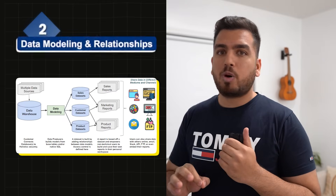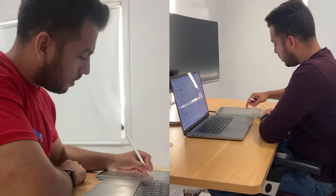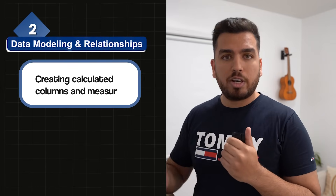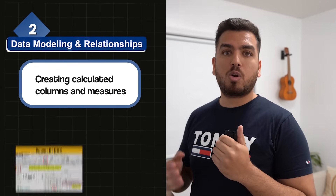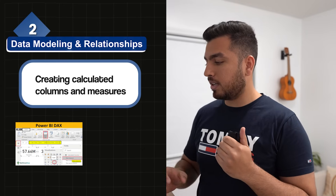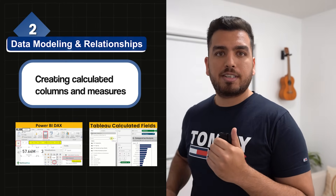Number two is data modeling and relationships. We already discussed in SQL that you'll be working with different kinds of tables and datasets. You should know how to establish relationships between different kinds of data sources. Inside this data modeling topic, you should also know how to create calculated columns — for example, in Power BI we have something called DAX, and in Tableau we have calculated fields.